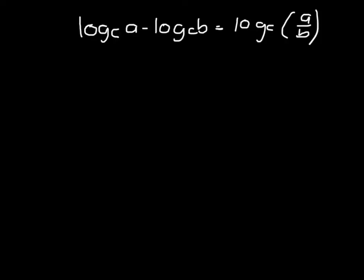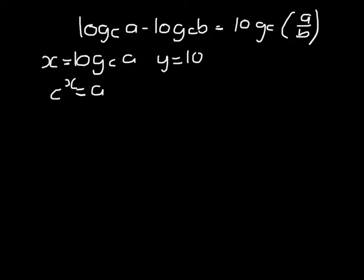The second formula is the subtraction law, and we start this again. We introduce a variable and write log to base c of a is x, so c to the power x is a. Then call y log to base c of b, so c to the power y is b. This time I'm going to divide.